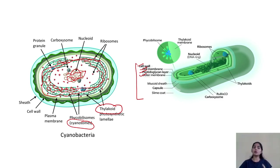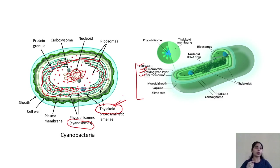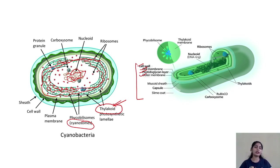We can say that in prokaryotic organisms there are no membrane-bound cellular organelles present, but in the case of cyanobacteria they consist of membrane-bound organelles known as thylakoids. This is the basic structural feature or basic structural organization of cyanobacteria.